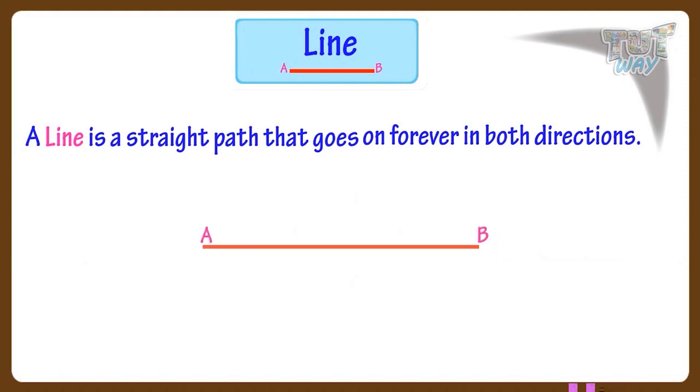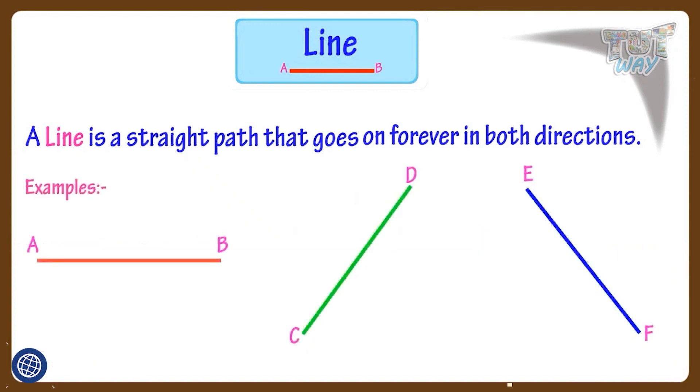This symbol is made on top of the name of a line. It denotes that the line goes on forever in both directions and there is no end point on it. Here are more examples of lines, and this is the way we write them.